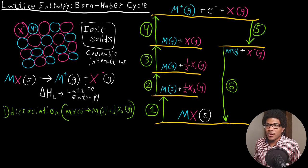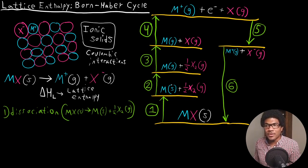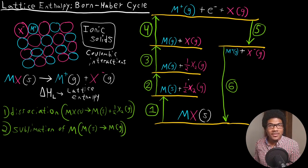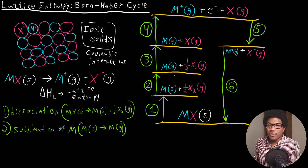Step two: looking at what happens going from this step to the next, we see that the metal goes from being a solid to a gas. So step two is purely the sublimation of the metal. M solid becomes M gas. That is the only thing occurring in this second step — X stays the same, and the only thing we're looking at is the sublimation of the metal.